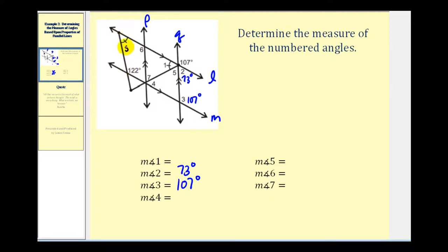Even though we don't have to determine the measure of this angle, notice that this angle is congruent with the measure of angle one. So the measure of angle one is also 58 degrees.